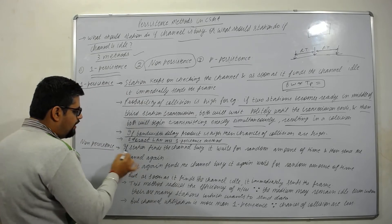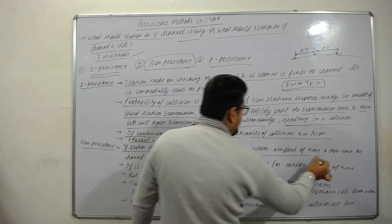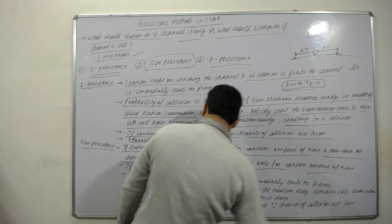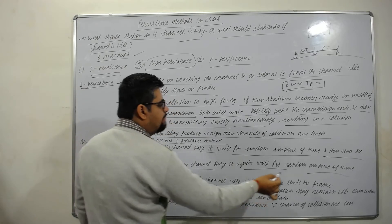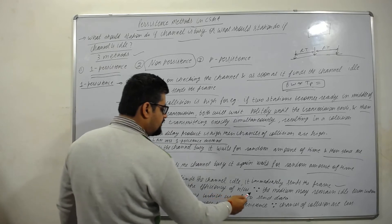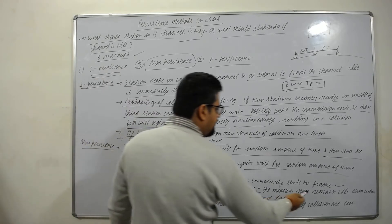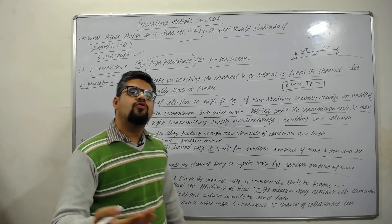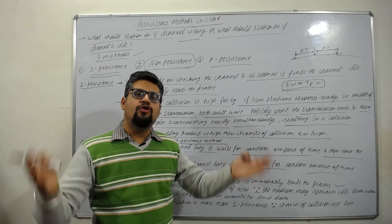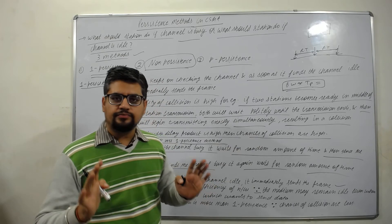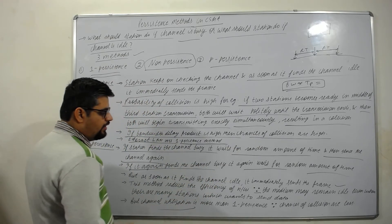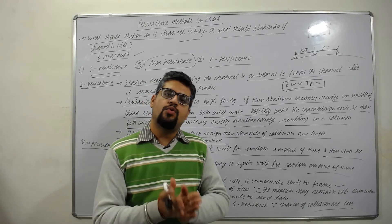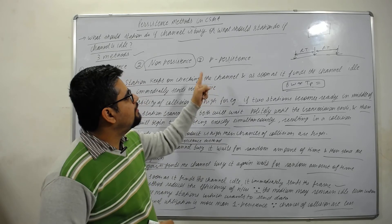In non-persistence: if a station finds the channel busy, it waits for a random amount of time and then senses the channel again. If it again finds the channel busy, it waits another random amount of time. As soon as it finds the channel idle, it immediately sends the frame. This method reduces the efficiency of the network because the medium may remain idle even when many stations want to send data, since all stations are waiting their random amounts of time. However, channel utilization is better than one-persistence because chances of collision are less.